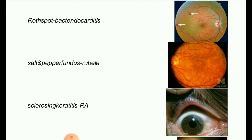Next image: Roth spot, which is seen in bacterial endocarditis. A Roth spot is a hemorrhage from ruptured blood vessels affecting the retina — the part of the eye that senses light and sends signals to the brain. Roth spots are also called Litten's sign. Next image: salt and pepper fundus, seen in rubella.